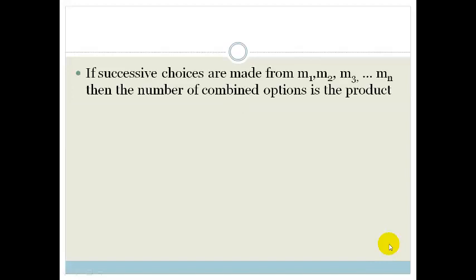So what it says is if successive choices are made from m₁, m₂, m₃ through to mₙ, then the number of combined options is the product. So therefore it would be m₁ times m₂ times m₃ times and so on. Horrible theory.